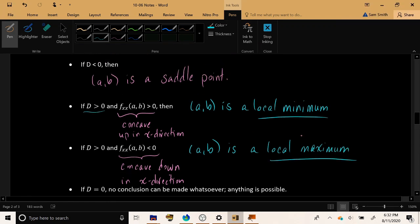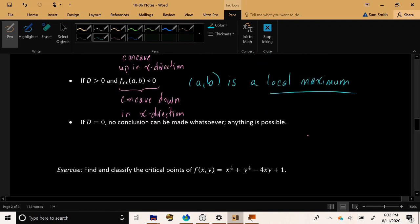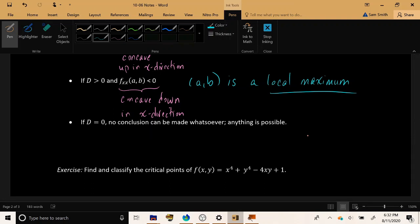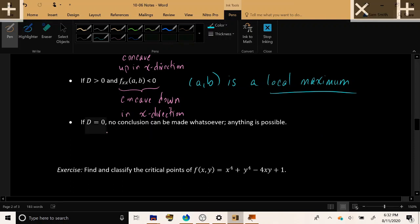Now, what about the final possibility? We've dealt with D less than 0, D greater than 0, but what if your determinant is exactly 0? Well, then you're out of luck. Your second derivative test has not told you anything at all. You cannot make any conclusions.